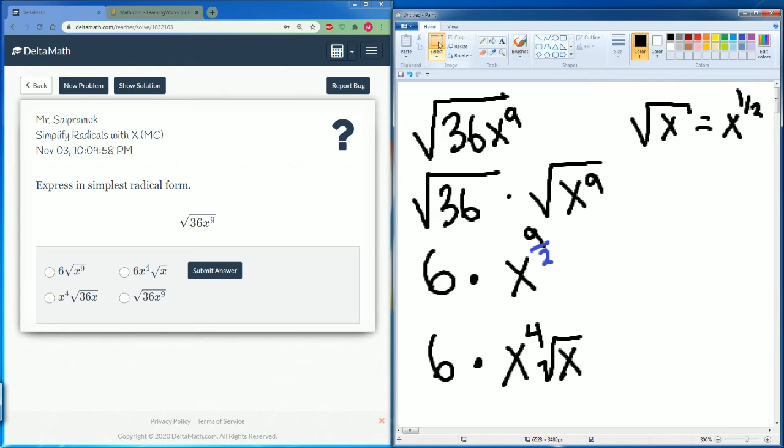So the final answer can be 6x to the four radical x. It would be this one.